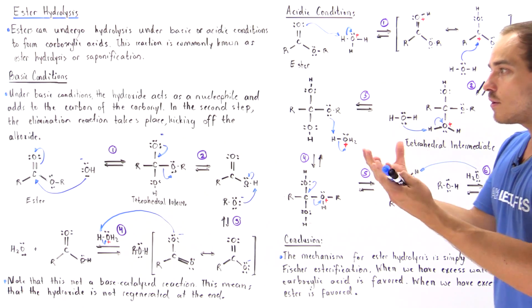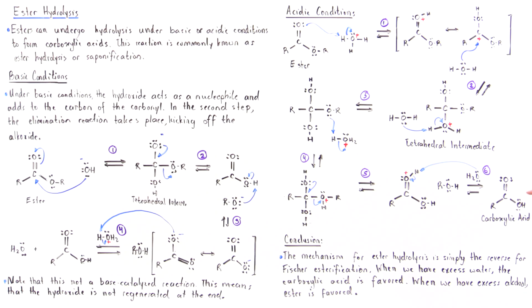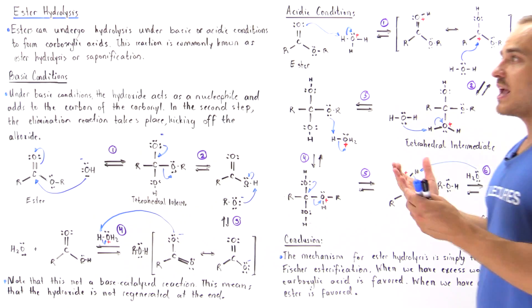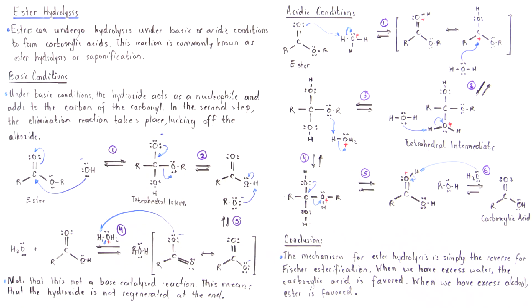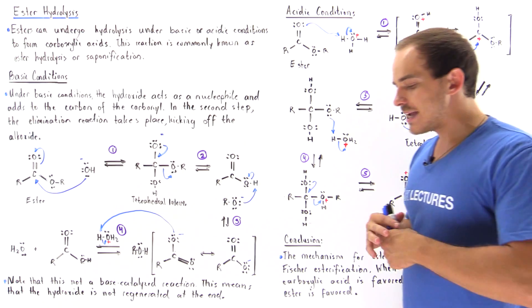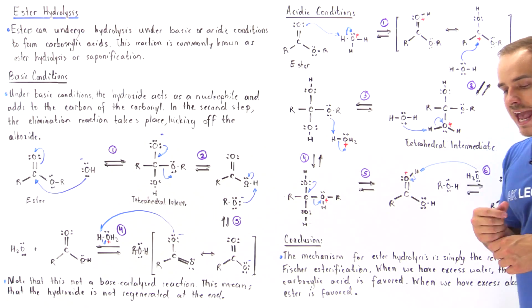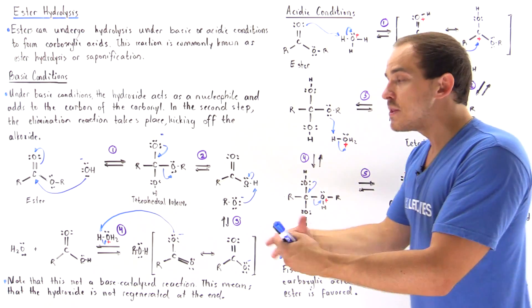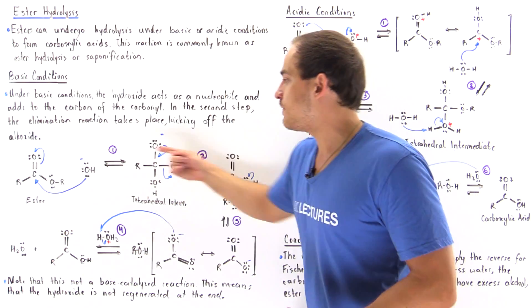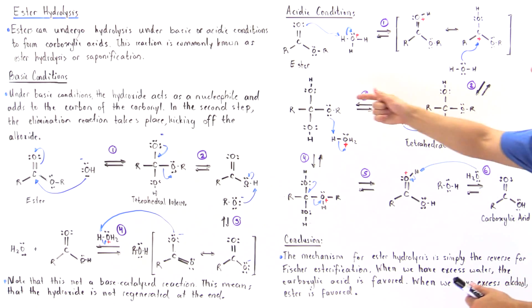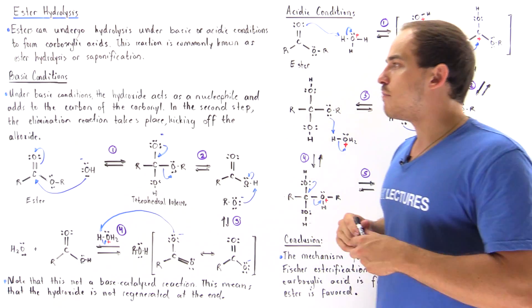Under acidic or basic conditions, we can take our ester and transform it into a carboxylic acid. This reaction is known as ester hydrolysis or saponification. Ester hydrolysis is basically the reverse of Fischer esterification — in Fischer esterification we form the ester from the carboxylic acid, while in ester hydrolysis we form the carboxylic acid from our ester molecule.